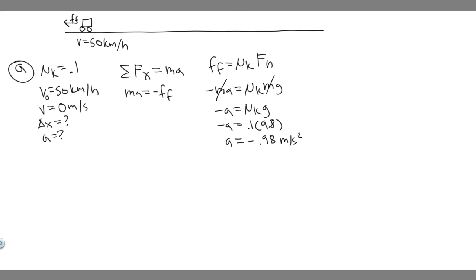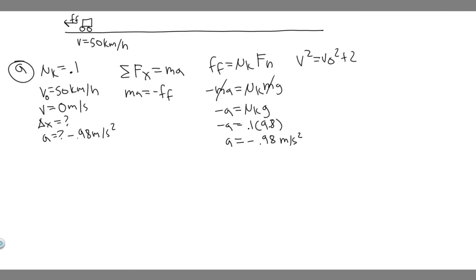Now we know the acceleration, which is what we needed to solve for delta x. We have acceleration, we have v, and we have v sub 0. The kinematic equation we're going to use is v squared equals v sub 0 squared plus 2a times delta x. We're using it because we have all the variables except delta x. Review kinematics if you're unsure how this works.